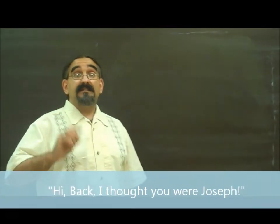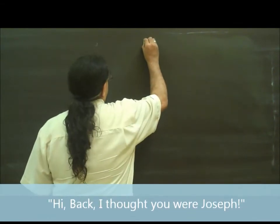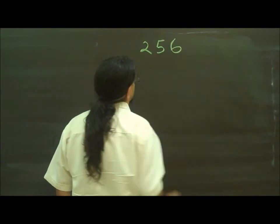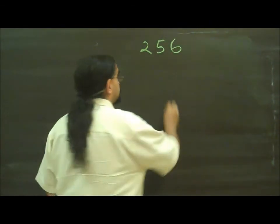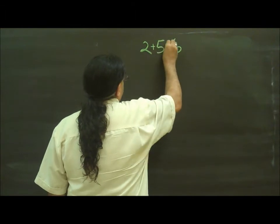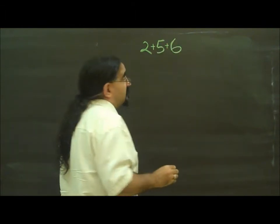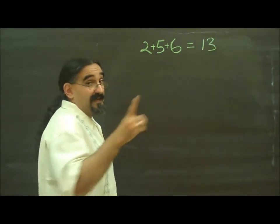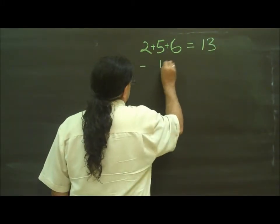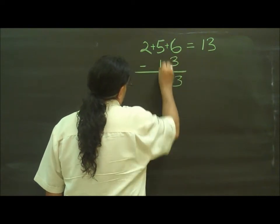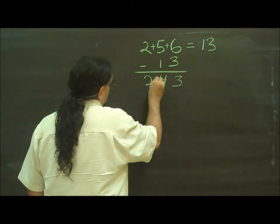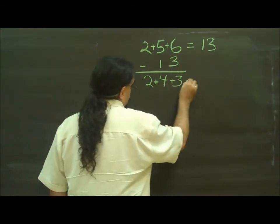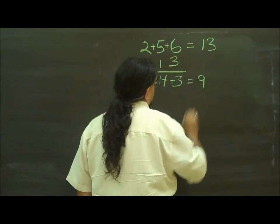Alright, I'm back. Let's take a three-digit number, say 256. Step 1, add those three numbers together. 2 plus 5 is 7, plus 6 is 13. Step 2, subtract that from your original number, and you will get 243. Step 3, add these three digits together. 2 plus 4 plus 3 equals 9.